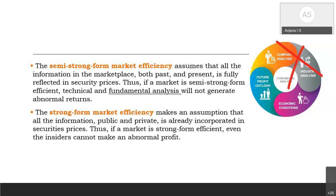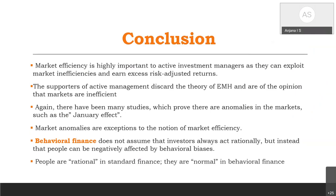To summarize the three forms: the weak form repudiates technical analysis; the semi-strong form repudiates both fundamental analysis and technical analysis; and the strong form is the most extreme. We have discussed the timeline of how market efficiency evolved, its principles — that all information is reflected in security prices, prices move randomly, and investors act rationally — and its three forms. Market efficiency is of very high importance in the field of finance.